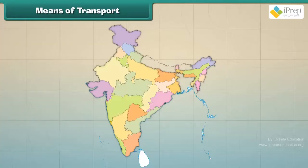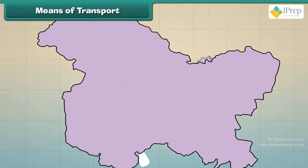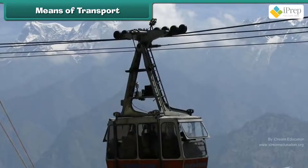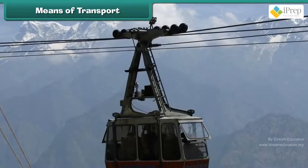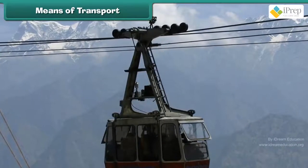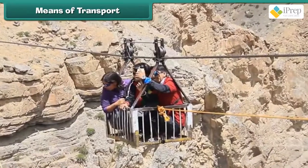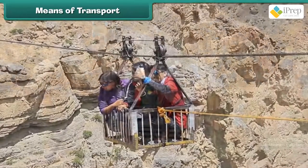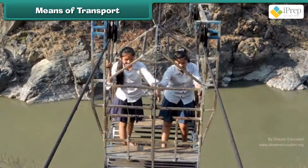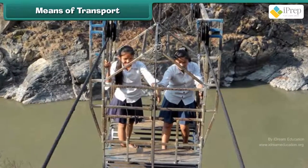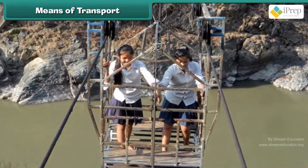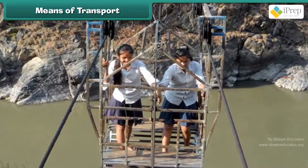In hilly areas such as Jammu and Kashmir, Leh and Ladakh, people use a trolley to reach from one place to another. The paths are rocky and uneven. Children who live in hilly areas find it easy to walk on these rocky surfaces.